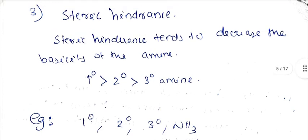Steric hindrance tends to decrease the basicity of the amine. In tertiary amines, there are three bulky groups attached to the nitrogen, which causes greater steric hindrance compared to secondary amines.